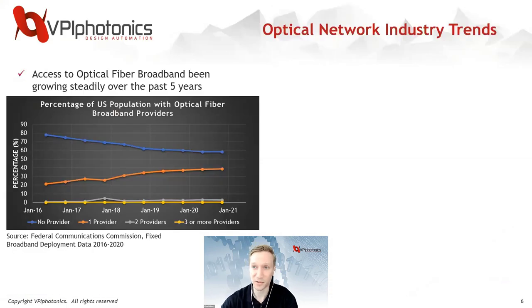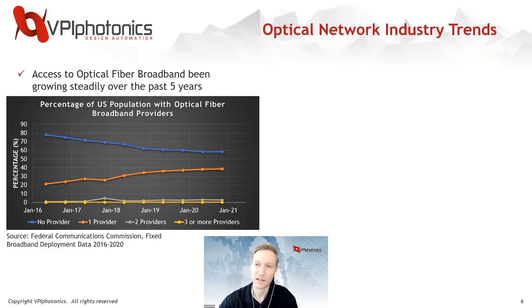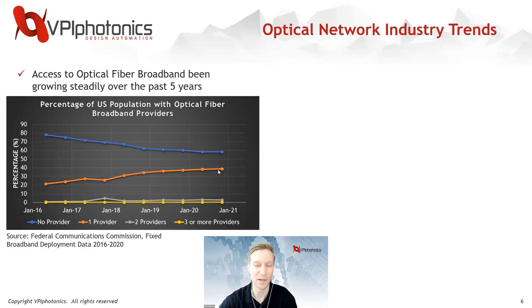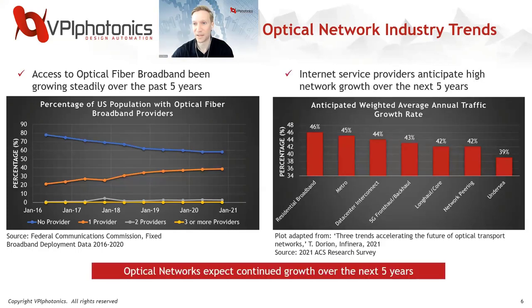I'll touch on some industry trends. I pulled data from the FCC, the Federal Communications Commission, showing the percentage of the U.S. population with access to optical fiber broadband over the past five years. Just five years ago only 20% of the population had access, and within five years now 40% of the population has access. There's actually starting to be some competition where some areas have two or more providers. I also found data from a research survey interviewing internet service providers to understand their anticipation of network growth over the next five years.